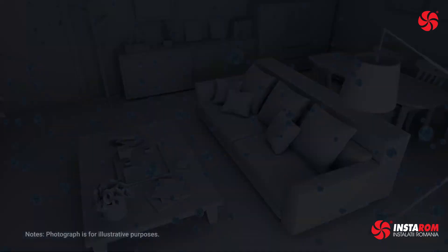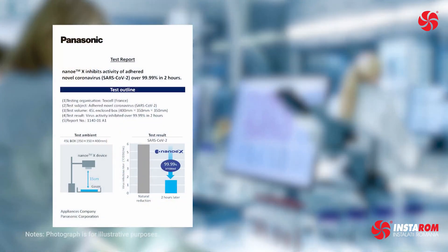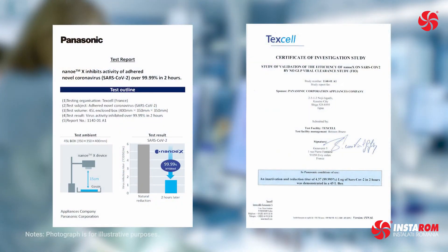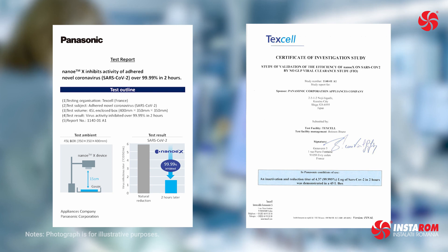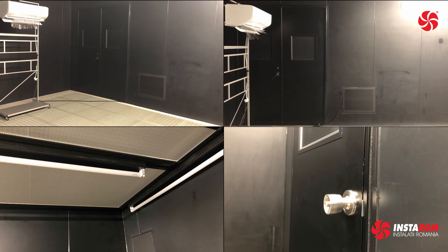According to verification by a prestigious European testing organization, nanoEX inhibited 99.99% of adhered novel coronavirus activity on gauze in a 45-liter box in two hours. Let's see how nanoEX is distributed from a Panasonic air conditioner into a room.